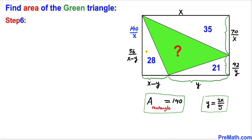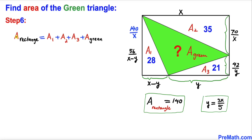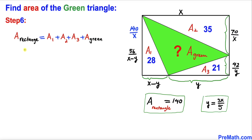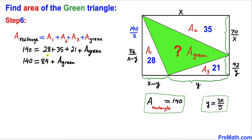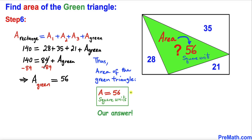For the final step, labeling the triangle areas as A1, A2, A3, and A_green, the area of the whole rectangle equals A1 plus A2 plus A3 plus A_green. We know the rectangle area is 140, A1 is 28, A2 is 35, and A3 is 21. Adding those three gives 84, so subtracting: 140 minus 84 gives the area of the green triangle as 56 square units.